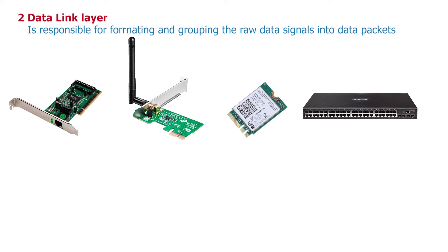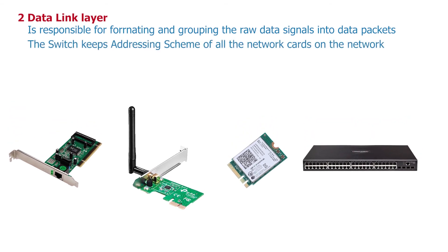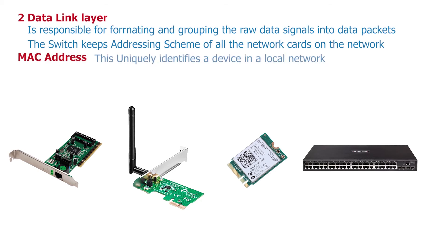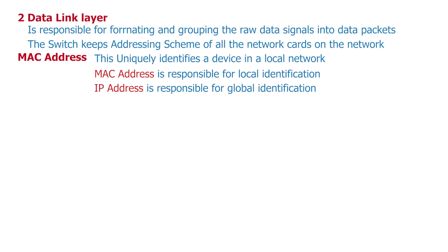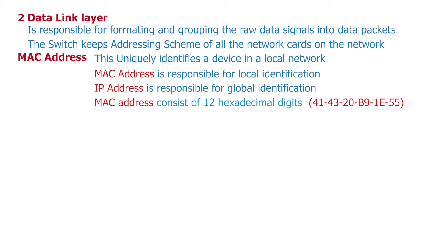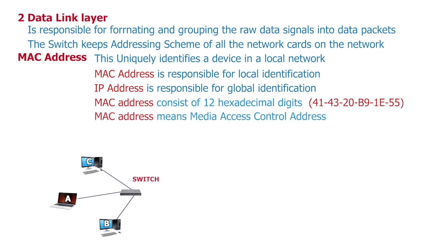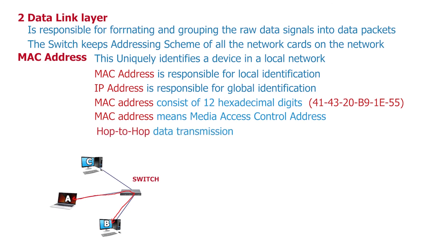What happens at this layer is that the switch keeps an addressing scheme of all the network cards that exist in the various devices on the network. This address is called the MAC address. A MAC address uniquely identifies a device in a local network and is therefore responsible for local identification, while an IP address is responsible for global identification. A MAC address consists of 12 hexadecimal digits usually grouped into pairs separated by hyphens. MAC stands for Media Access Control. In a local area network, if host A transmits data to host B, the switch looks at where the data is coming from, formats it into packets, and establishes a connection between the source and destination network interface cards to transmit the data. This is called hop-to-hop data delivery.